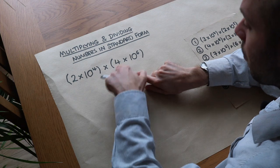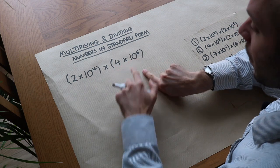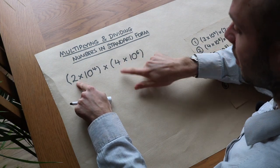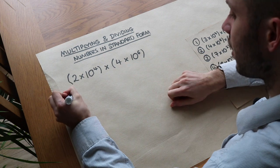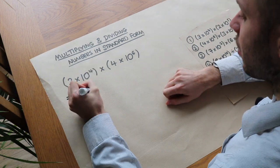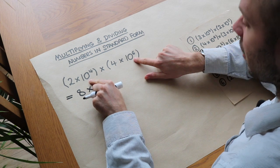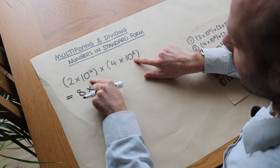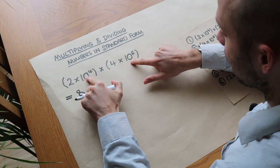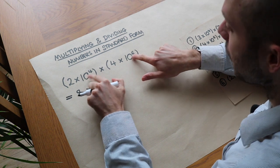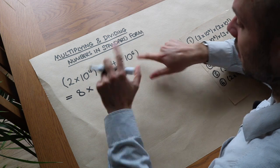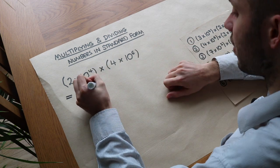If we're multiplying all four things together we can choose what order we multiply them. So let's say we did 2 times 4 first — that gives you 8 — and then we could do 10 to the 4 times 10 to the 6. Now we know when we multiply two things together that have the same base, the 10 is the same, then we can add the powers, and 4 plus 6 is 10.